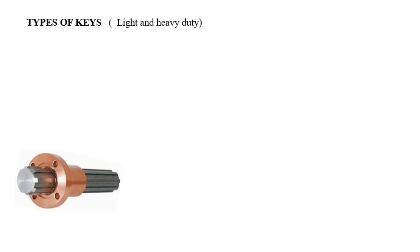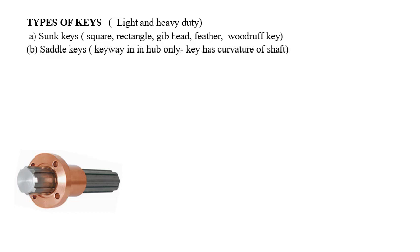We will see types of keys. There are two main classifications: light and heavy duty keys. Sunk keys, square, rectangular, gib head, feather, and woodruff keys are light duty keys. Next is saddle keys, where the keyway is in the hub only and the key has the curvature of the shaft. Third is tangent keys, fourth is round keys, and last one is splines. These are the types of keys which we have.